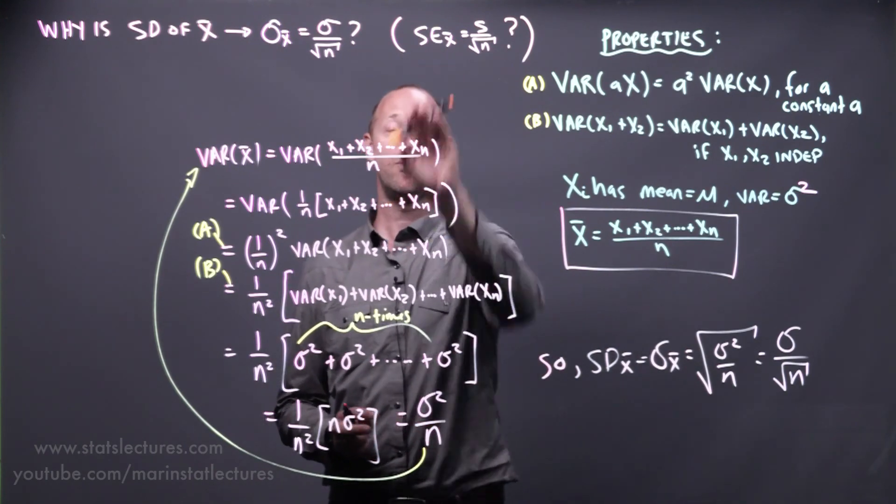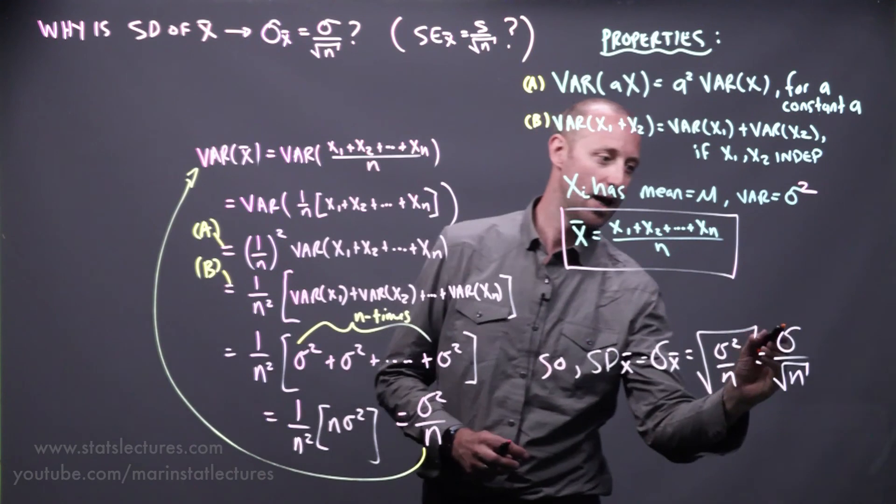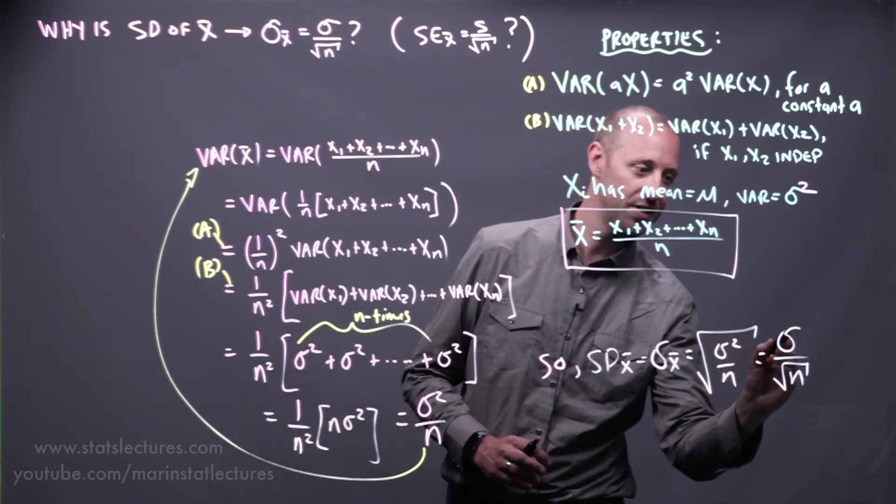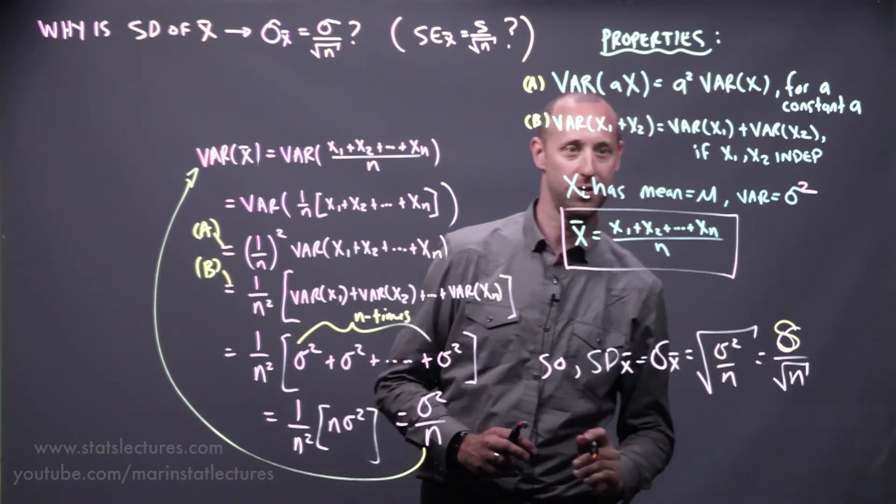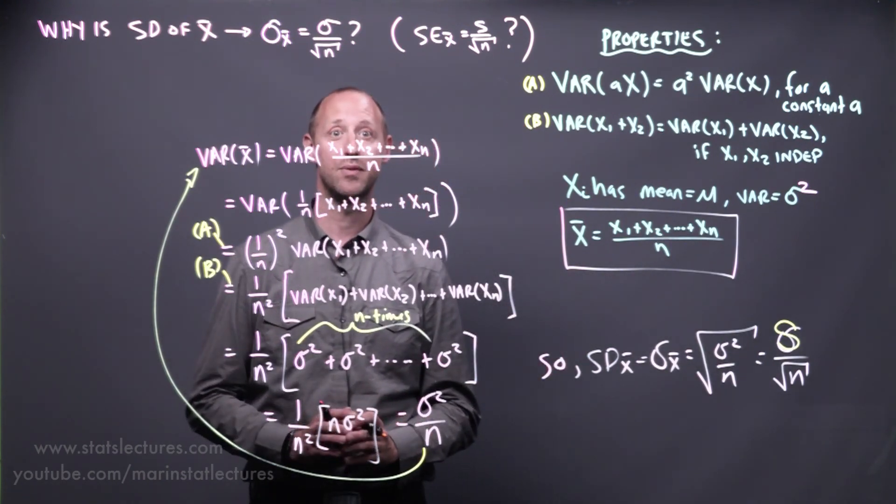And just a note, when we move into dealing with samples, we start to call it the standard error, and we replace the population standard deviation with the sample standard deviation. But that's how we got to that formula that we've seen previously.